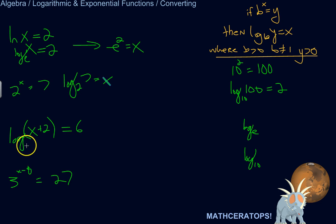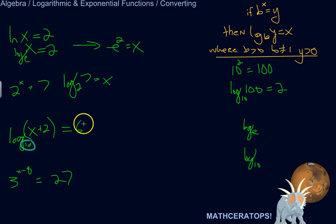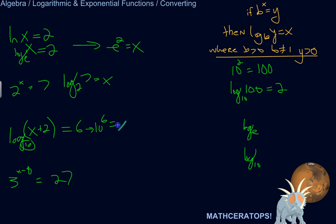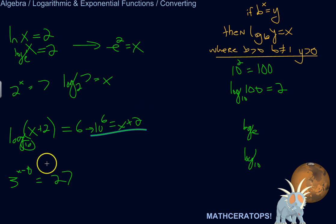Log with no base shown — the assumption is that it's log base 10. So log base 10 of (x plus 2) equals 6. That means you have to raise the base, 10, to the power of 6 to turn it into x plus 2. So that is equivalent to saying 10 to the power of 6 equals x plus 2. That's 1 with 6 zeros equals x plus 2, then subtract 2 from both sides.